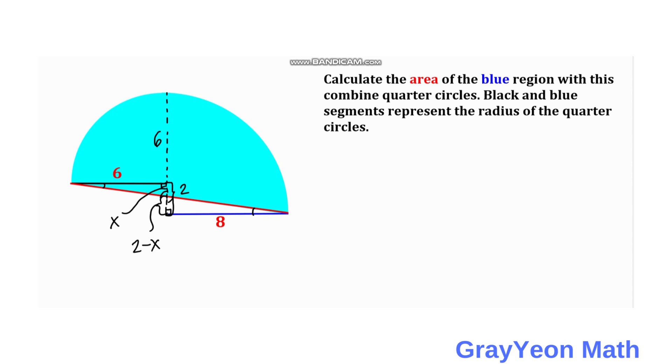By using similarity theory, for this smaller triangle the shorter leg is actually x over the longer leg which is 6. It is proportional to this larger triangle, so we can say that x over 6 is equal to the shorter leg which is 2 minus x, all over 8.